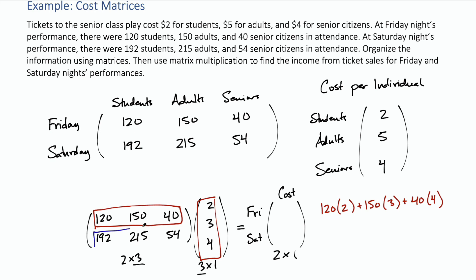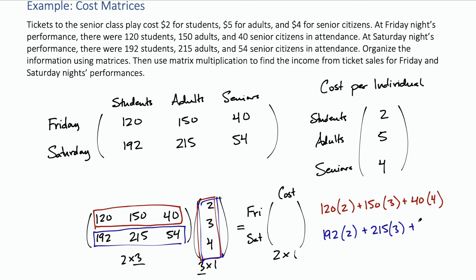For the second entry — Saturday — that's our second row times the first column. We have 192 times 2, plus 215 times 5, plus 54 times 4.